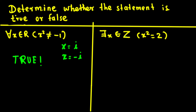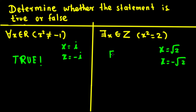Now let's look at the next one. There exists x belonging to the integers such that x squared is equal to 2. The values that satisfy this are x equals square root of 2 and x equals negative square root of 2. But these are not integers. So there is no integer that makes x squared equal to 2, which means this statement is false.